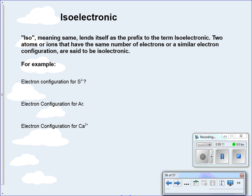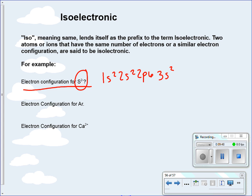The last thing we want to talk about is isoelectronic. 'ISO' means the same and is a prefix for the term isoelectronic, meaning two atoms or ions that have the same number of electrons, or a similar electron configuration, are said to be isoelectronic. For example, sulfide is S2 negative, which means we're adding two electrons to sulfur's normal 16 electrons. Sulfur is normally 1s2, 2s2, 2p6, 3s2, 3p4 — but as sulfide, it ends at 3p6. That leads us to the electron configuration for argon: 1s2, 2s2, 2p6, 3s2, 3p6 — 18 electrons, and 8 valence electrons, 6 plus 2.